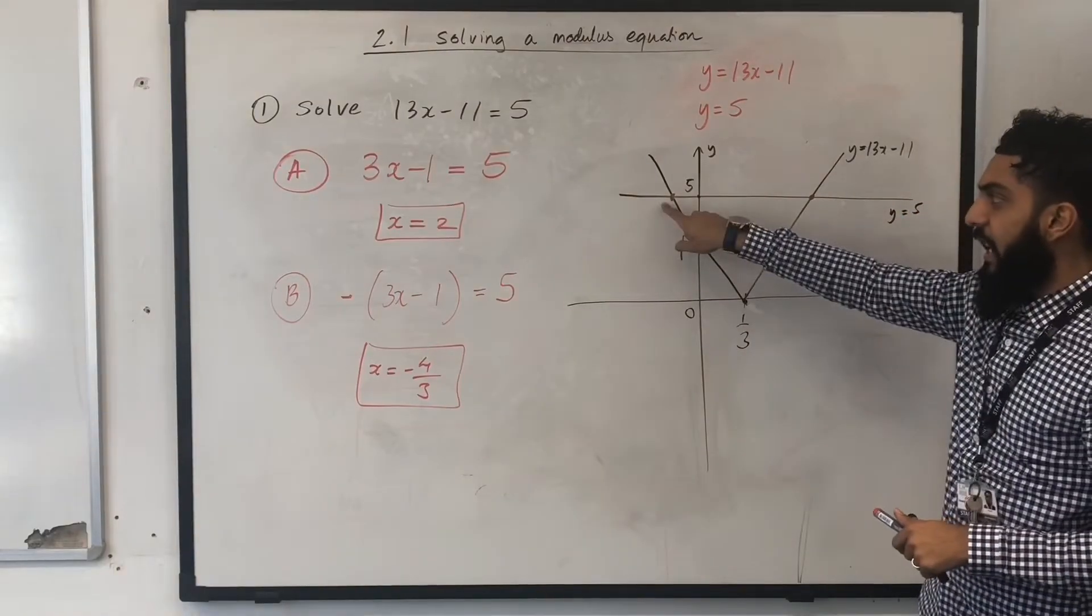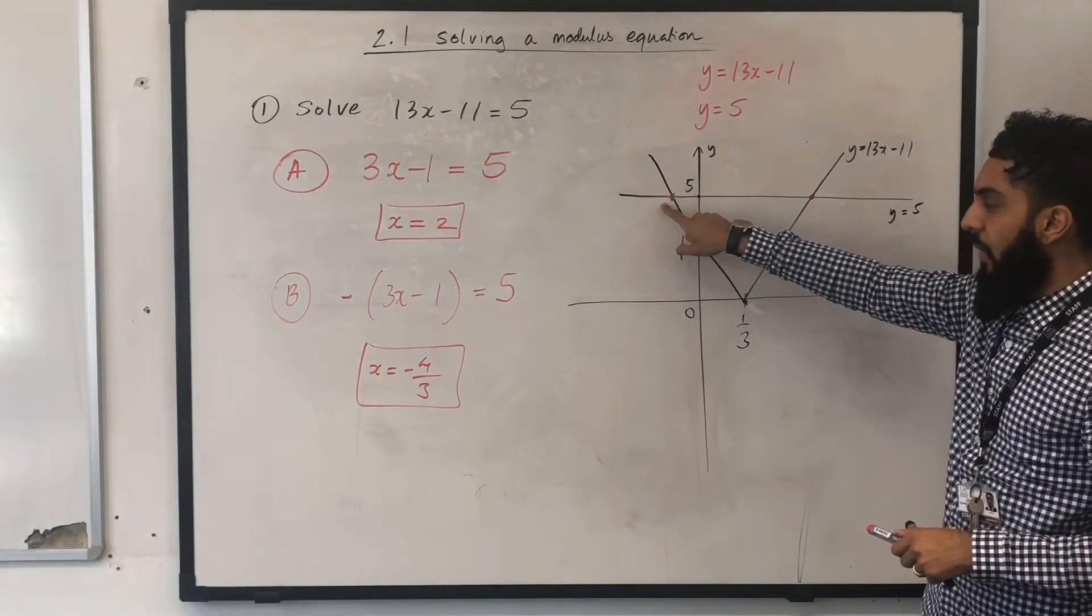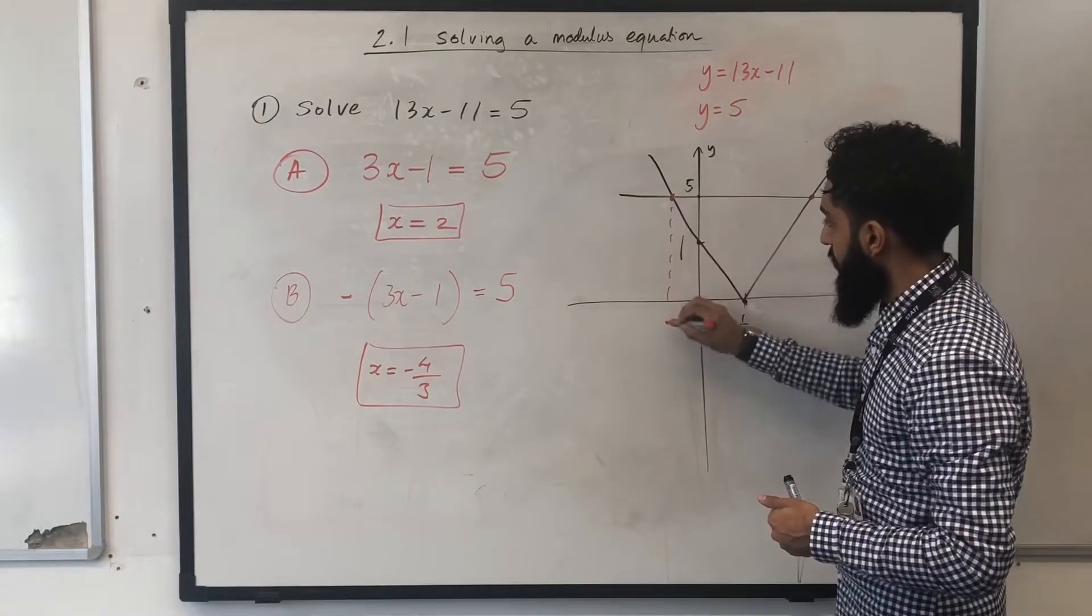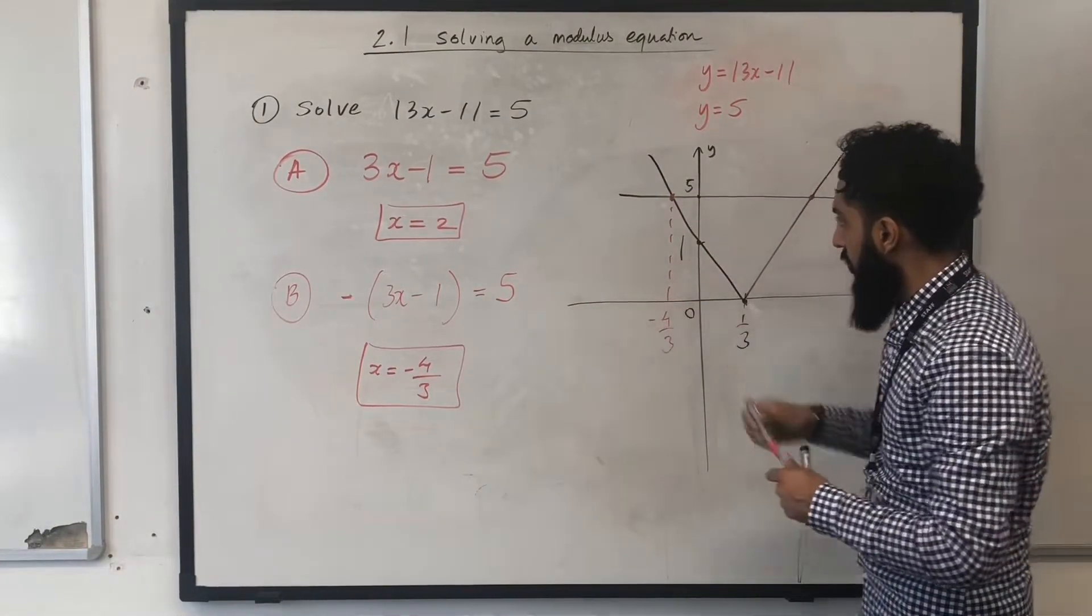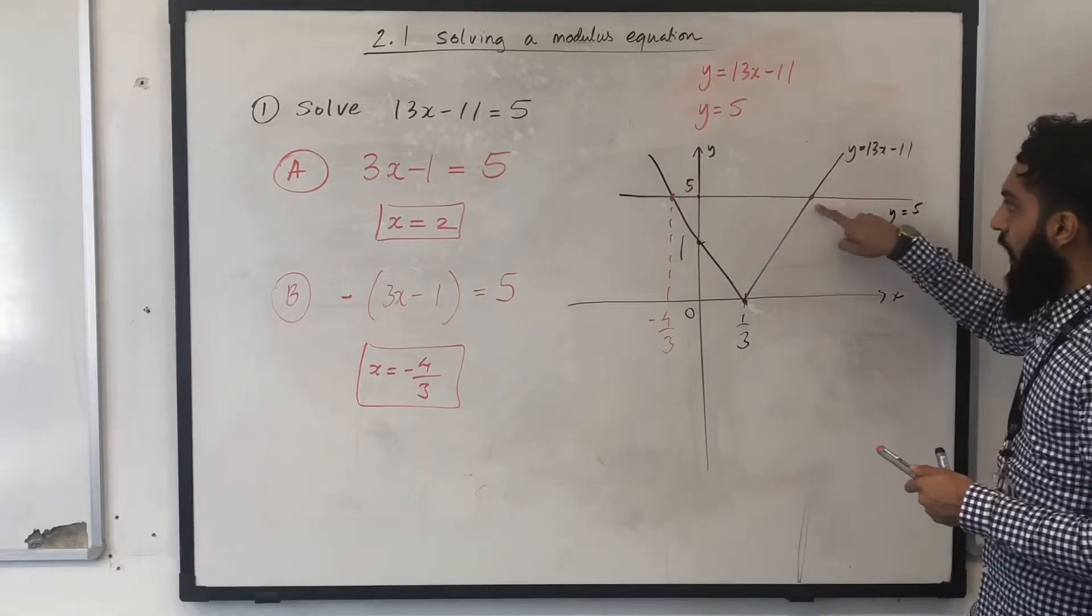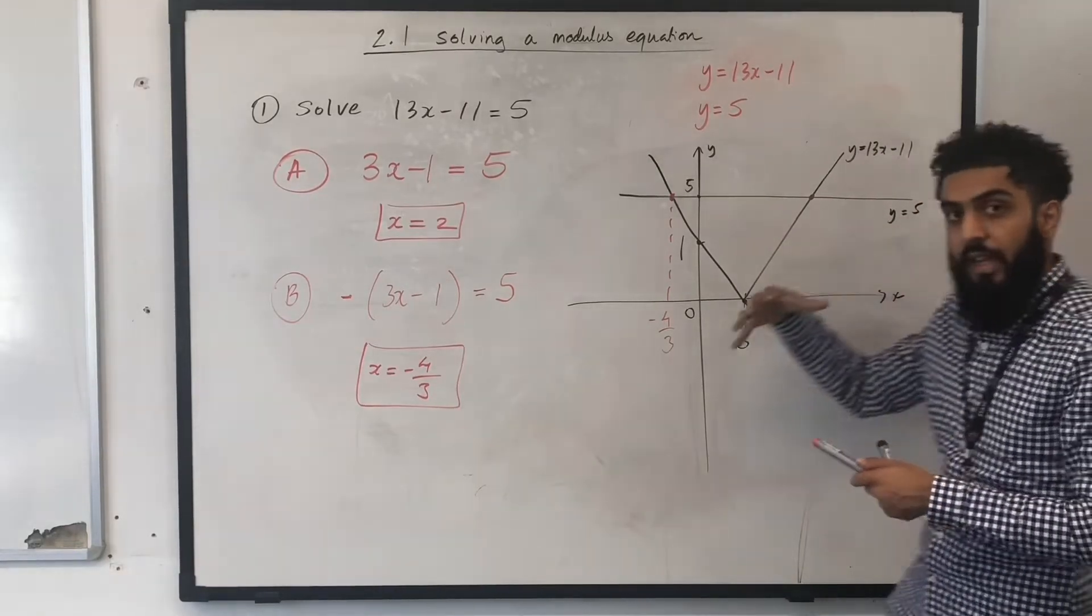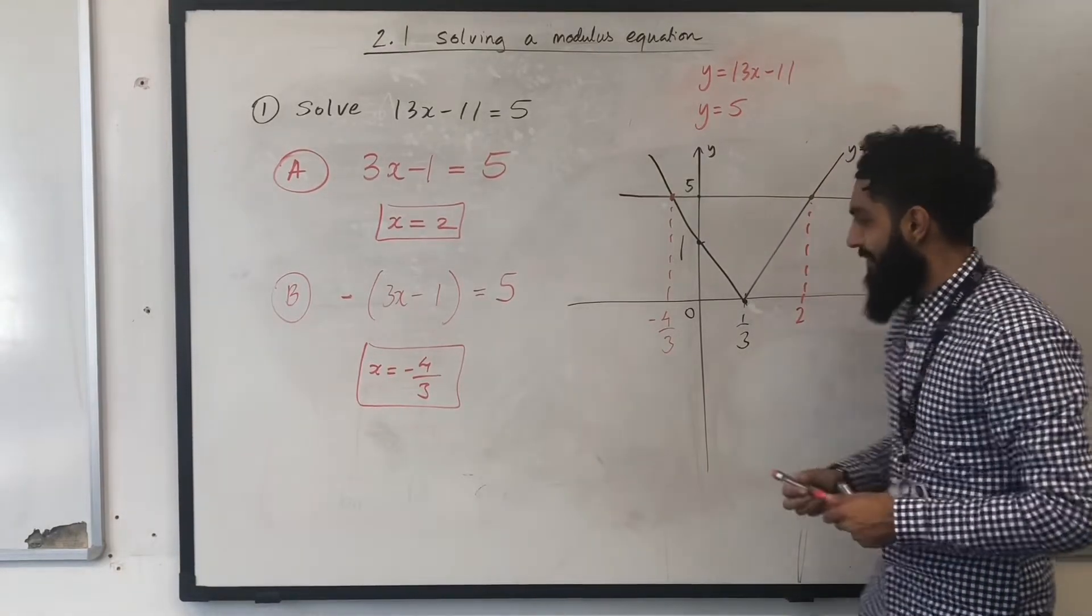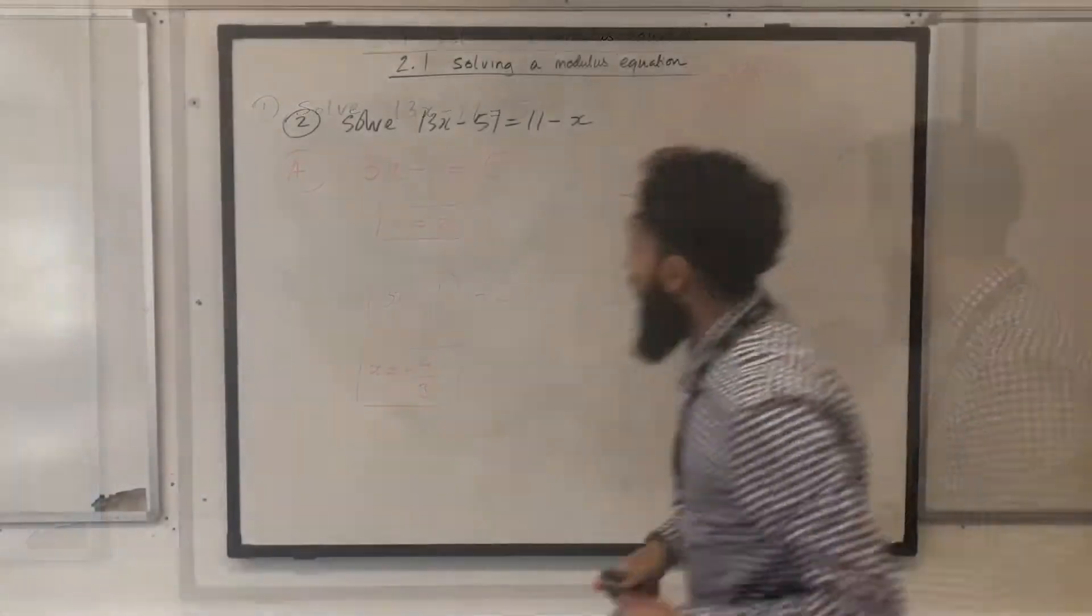Now this intersection has a negative x value, so it will be minus 4 over 3. And this point over here has a positive x value, so in this case it will be 2.